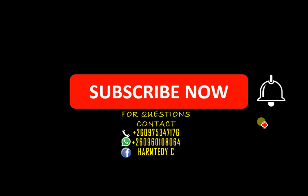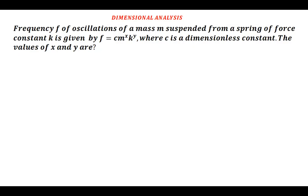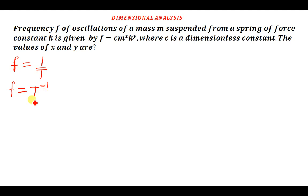According to what we know, frequency is given by one over period. So the dimensions for frequency can be written as T to the power negative one, which can also be written as M to the power zero, L to the power zero, T to the power negative one. Let us also find the dimensions for the other variables we've been given.